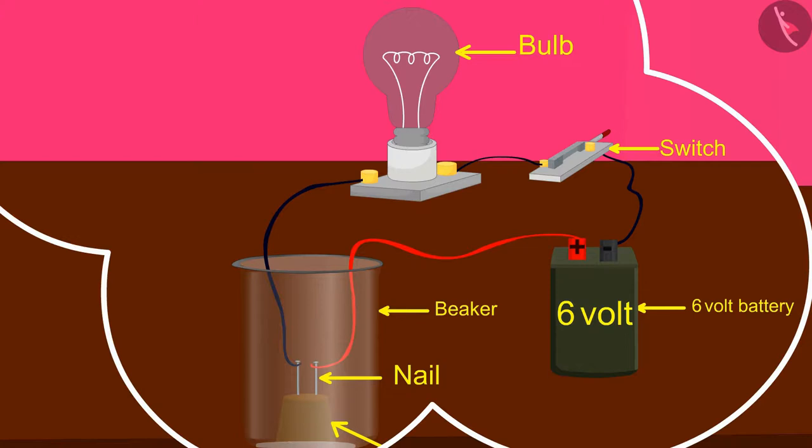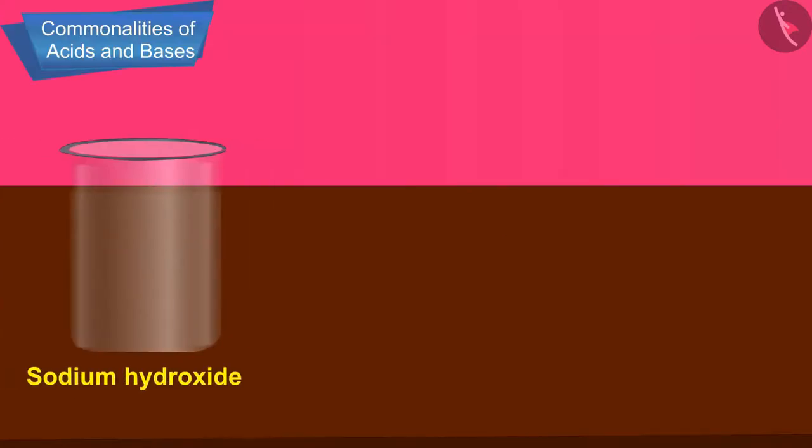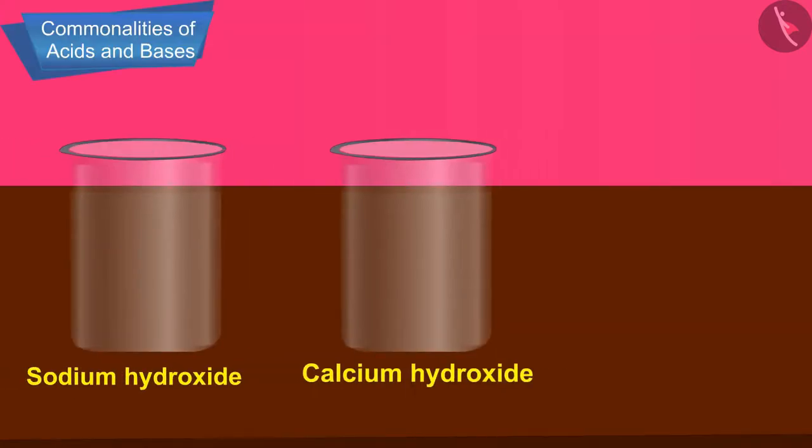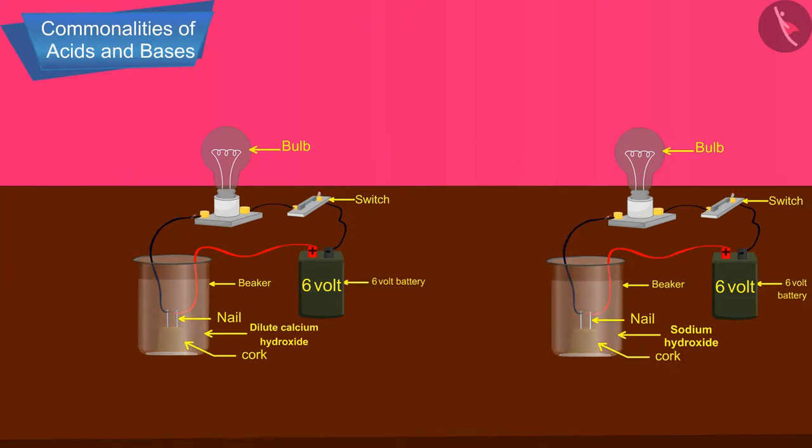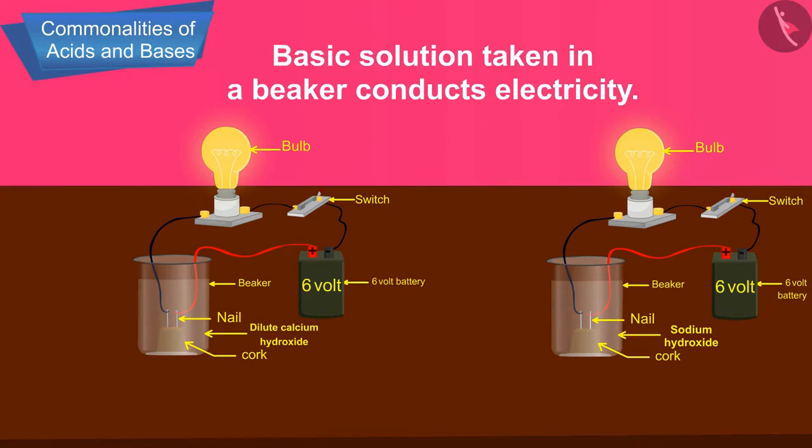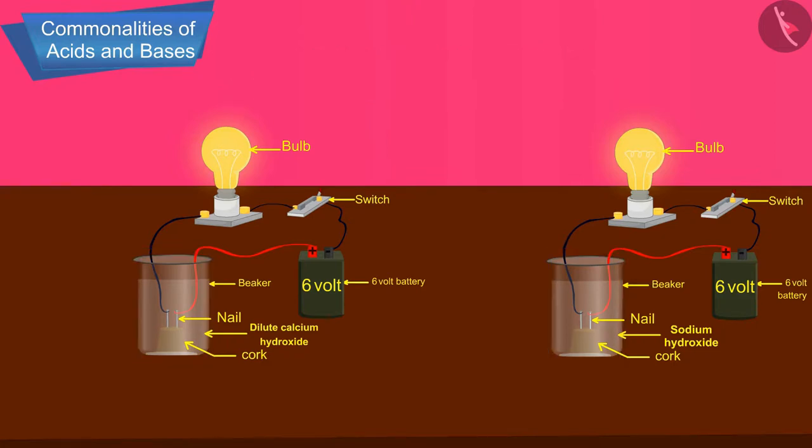And the bulb starts glowing. This shows that basic solution taken in a beaker conducts electricity. Glowing of the bulb indicates that there is a flow of electric current through the solution. The electric current is carried through the basic solution by ions.